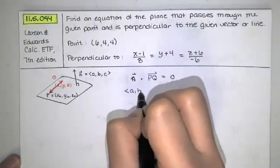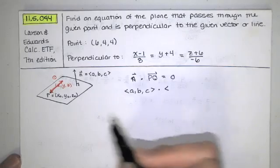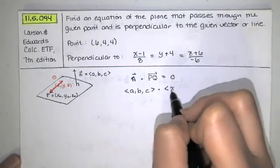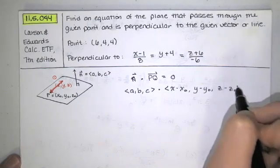Well that means I'm taking the vector with components a, b, and c and I'm dotting it with the vector with these components x minus x naught, y minus y naught, and z minus z naught.